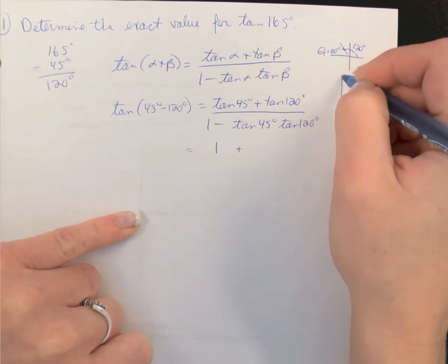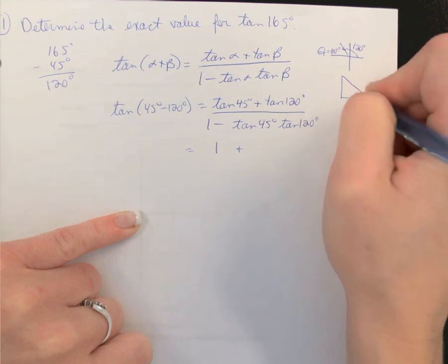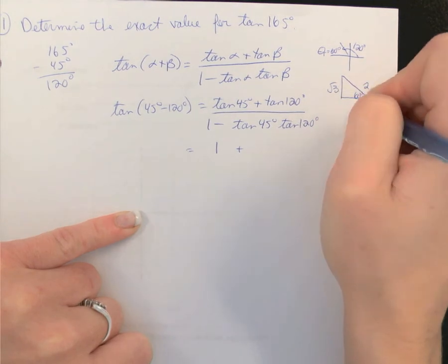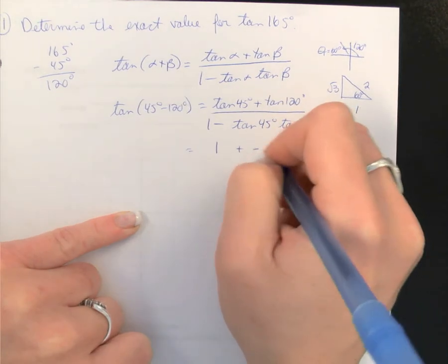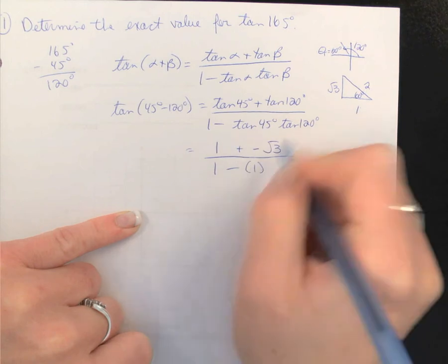So we know tan is negative. And we can use our 60 degree special triangle and look up tan - opposite over adjacent is √3. So we're going to have negative √3. I already put my plus sign, so we'll just keep it as negative there. 1 minus tan of 45 again is 1 times tan of 120 is negative √3.